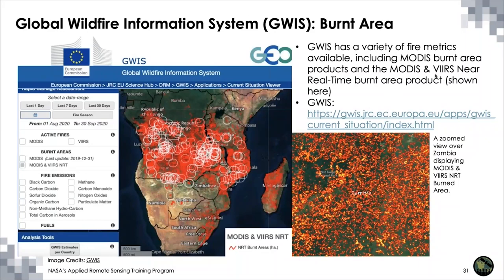The Global Wildfire Information System, or GWIS, which we reviewed in our first session, can also be used for active fire mapping and post-fire burned area. We discussed the MODIS burned area product, which you can find there as well, and you can compare it to near-real-time MODIS and VIIRS hotspot data.